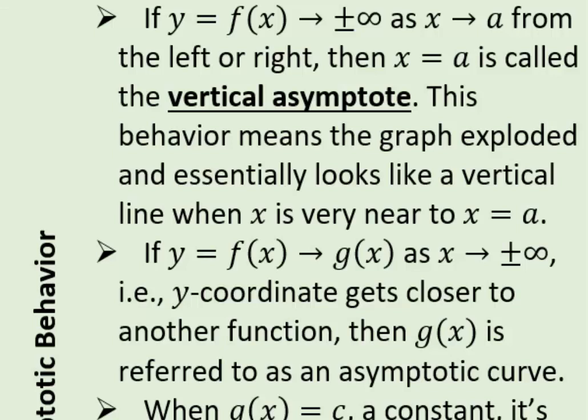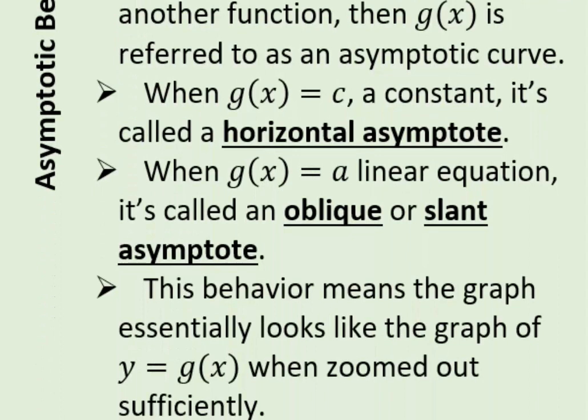When a function goes to plus or minus infinity as x goes to some value a, you have a vertical asymptote. If a function approaches another function g(x) as x goes to plus or minus infinity, we say g(x) is an asymptotic curve. If g is a constant, you get a horizontal asymptote. If g(x) is a linear equation, you get an oblique or slant asymptote — don't worry too much about slant asymptotes right now, we'll study them later. Essentially, the graph of the original function looks like g(x) when you zoom far out.